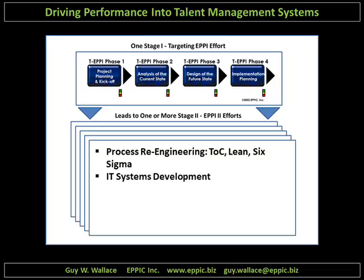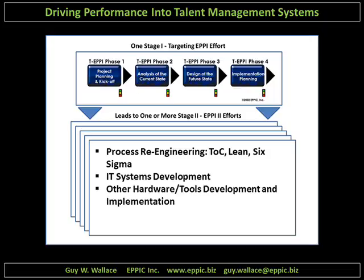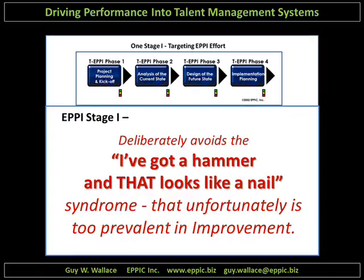Stage two could include information technology systems development and implementation, other hardware and tools development and their implementation, and instruction and knowledge management systems, content development, etc. The purpose of EPI stage one is to deliberately avoid using the methodology set of choice of practice. If someone's got a hammer, everything begins to look like a nail. If you're a Six Sigma practitioner, every problem looks as if it might be solved using Six Sigma. If you're an instructional designer, training might be your solution of choice.